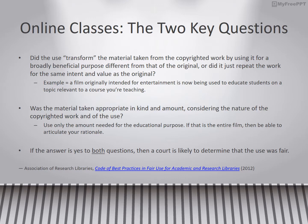According to the Code of Best Practices in Fair Use for Academic and Research Libraries, written by the Association of Research Libraries in 2012, courts have recently focused on two key questions in copyright cases. Number one: did the use transform the material taken from the copyrighted work by using it for a broadly beneficial purpose different from that of the original, or did it just repeat the work for the same intent and value? For example, a film created for entertainment purposes being shown for an educational purpose. Number two: was the material taken appropriate in kind and amount, considering the nature of the copyrighted work and of the use? Use only the amount needed for the educational purpose. If that is the entire film, then be able to articulate your rationale. If the answer is yes to both questions, a court is more likely to determine that the use was fair.